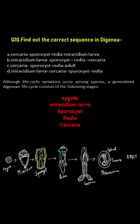Find out the correct sequence in Digenia. Option A: Cercaria, sporocyst, redia, Miracidium larva. Option B: Miracidium larva, sporocyst, redia, Cercaria. Option C: Cercaria, sporocyst, redia, adult. Option D: Miracidium larva, Cercaria, sporocyst, redia.